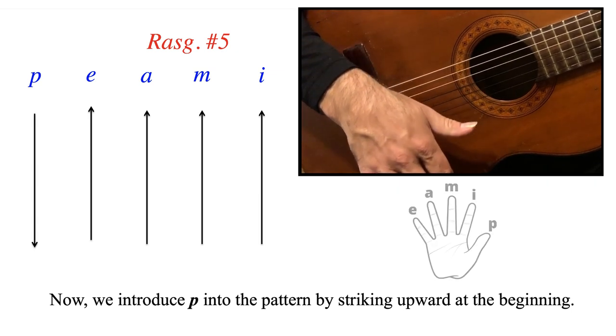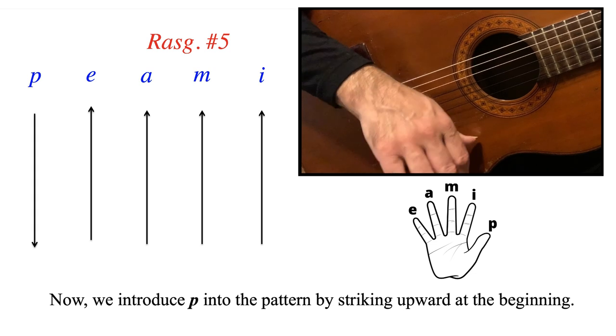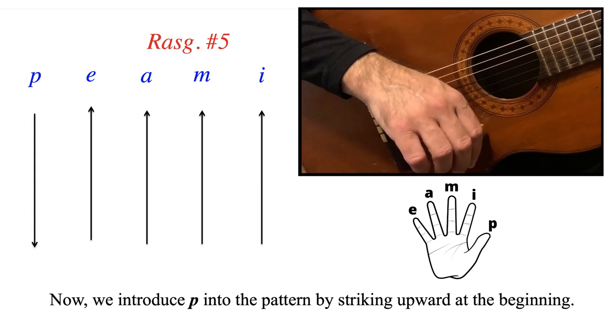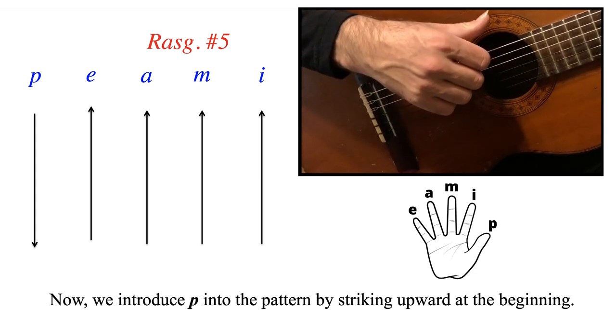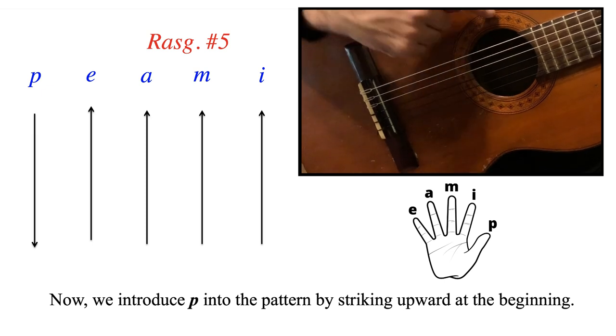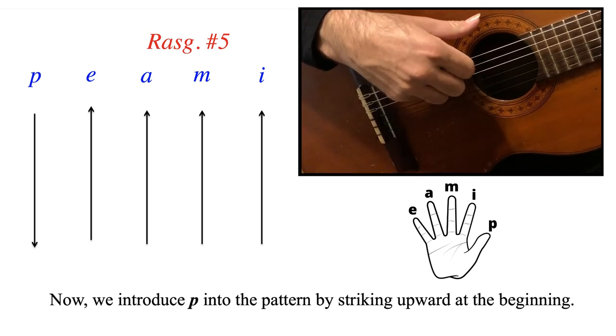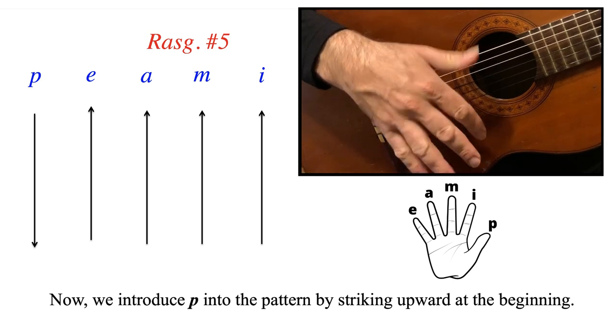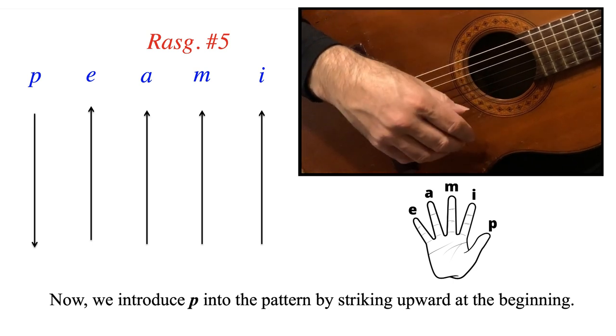And as we cycle again, thumb needs to come back down underneath the first string, pass along all the strings including the sixth string right about here in the zone of the rosette, and then downward E, M, I, for a nice full explosive rasqueado.